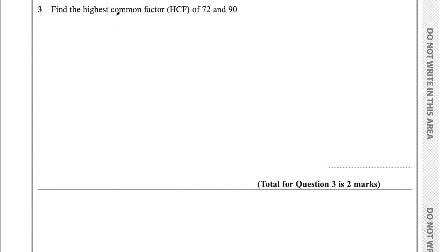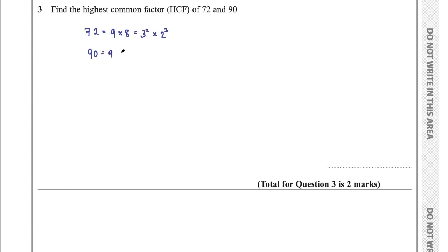Question 3 says find the highest common factor of 72 and 90. For this I'm going to use prime factorisation. You don't have to use this method, but once you get the hang of it you don't need to worry about anything else. 72 is 9 times 8; 9 is 3 squared and 8 is 2 cubed, so 72 is 3 squared times 2 cubed. 90 is 9 times 10.